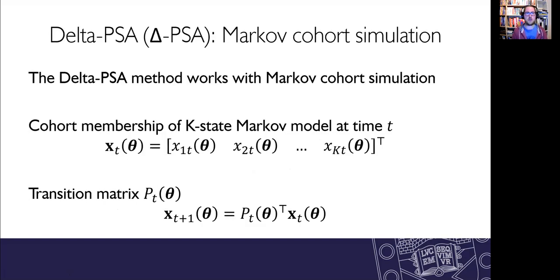Now, you probably don't think of typical models as being a function. We would normally have something more like a Markov cohort simulation and the delta PSA method works fine. So let's have a look here at a Markov model that has k states. The cohort membership at a given time t is given by x subscript t. And the transition matrix for that cycle or time t is given by p subscript t. And then the Markov model evolves, as you would expect, x at time t plus one is that transition probability matrix multiplying the state membership vector.